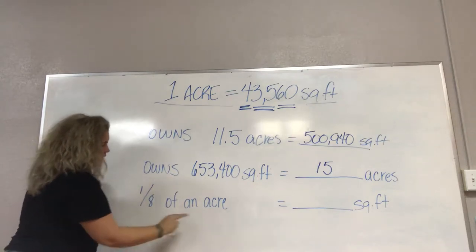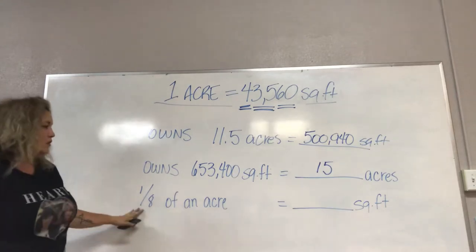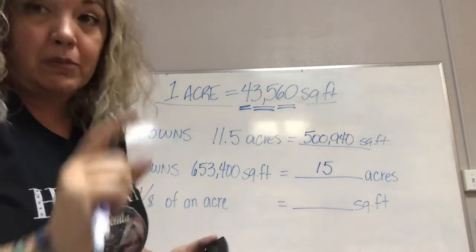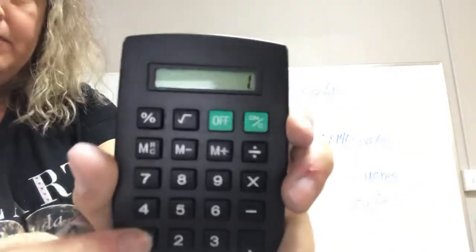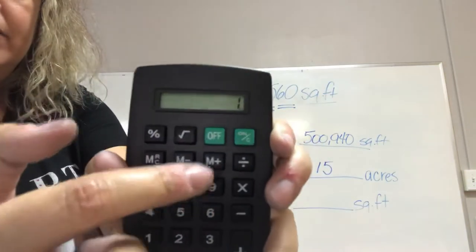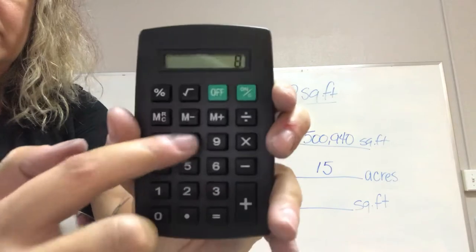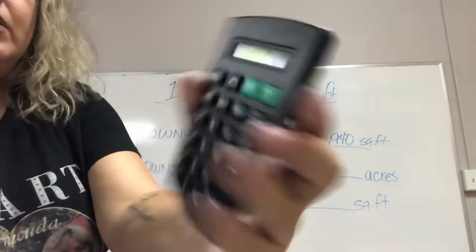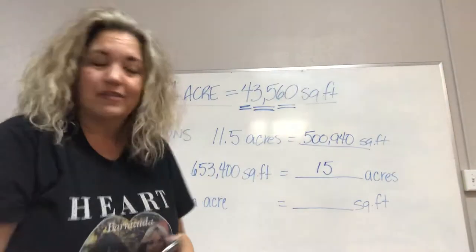And that way we can figure out what we need to put here because it's going to be a little decimal number times 43,560 to figure out how many square feet. So let's figure this out. We have a fraction. That bar in the middle between the one and the eight means to divide. So one divided by eight equals 0.125 of an acre.